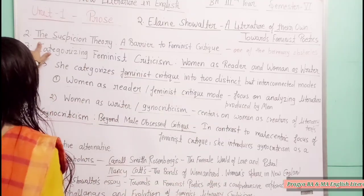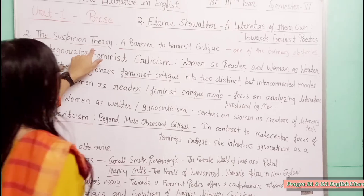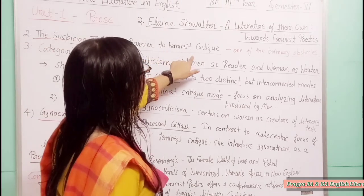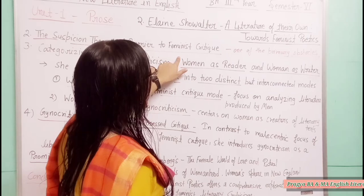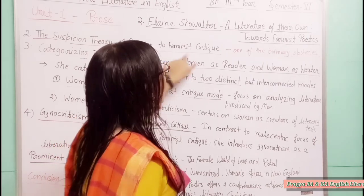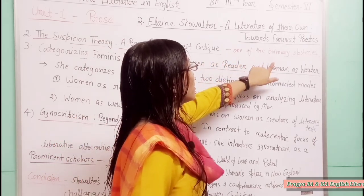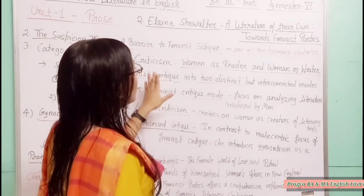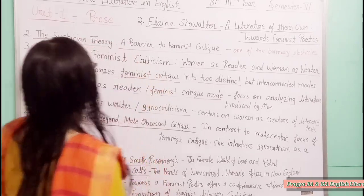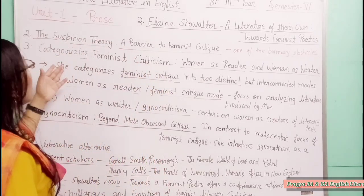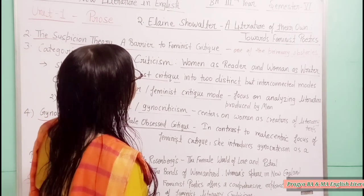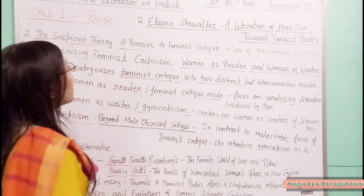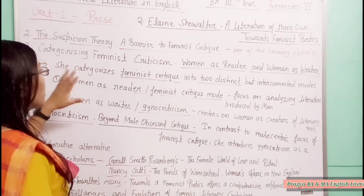The next point is the suspicion theory — a barrier to feminist criticism. One of the primary obstacles faced by feminist critics at that time was the suspicion theory. Literary theory had developed over twenty years largely from a patriarchal perspective.